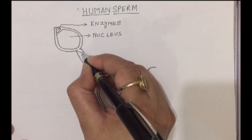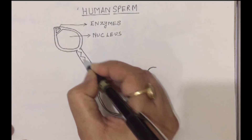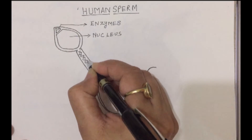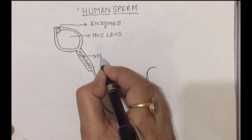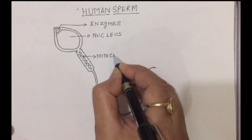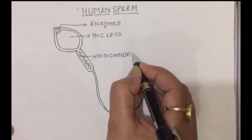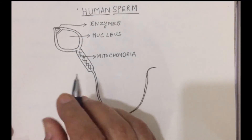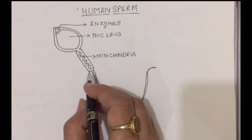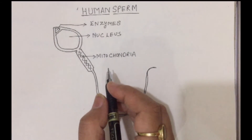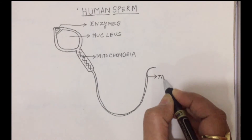Now the middle piece is very very important because it has mitochondria present. Mitochondria, as we know, performs photosynthesis and it provides energy to the sperm. And this is the tail.